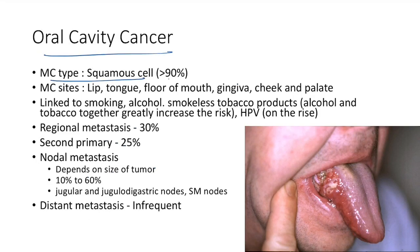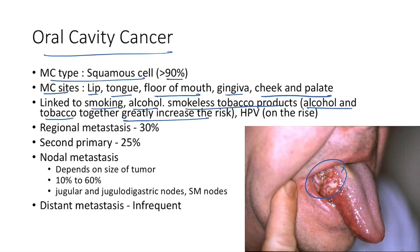Oral cavity cancer: the most common type is squamous cell carcinoma, seen in more than 90% of cases. The most common sites are the lip, tongue, floor of mouth, gingiva, cheek, and palate. Risk factors include smoking, alcohol, smokeless tobacco products — using both alcohol and tobacco greatly increases risk. HPV is also a risk factor and is on the rise. Regional metastasis occurs in 30% of cases; a second primary occurs in 25% of cases.